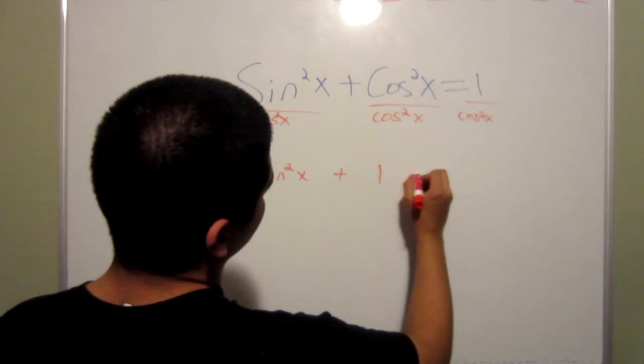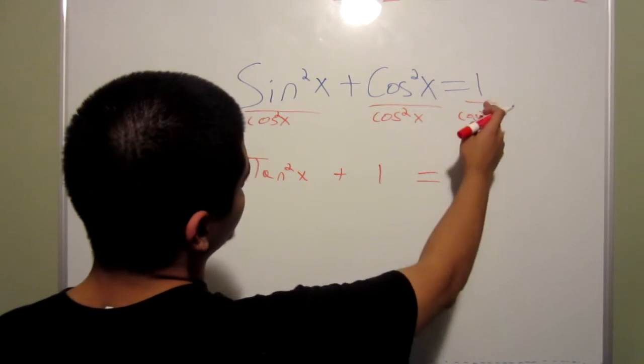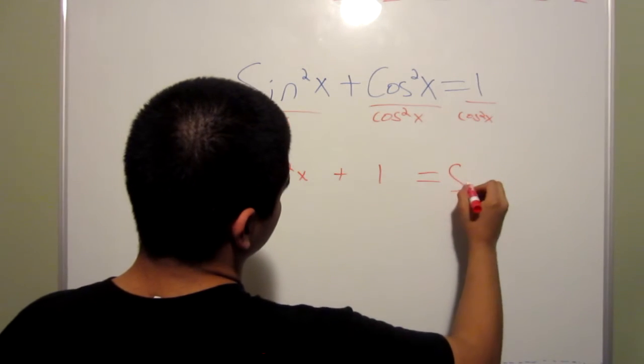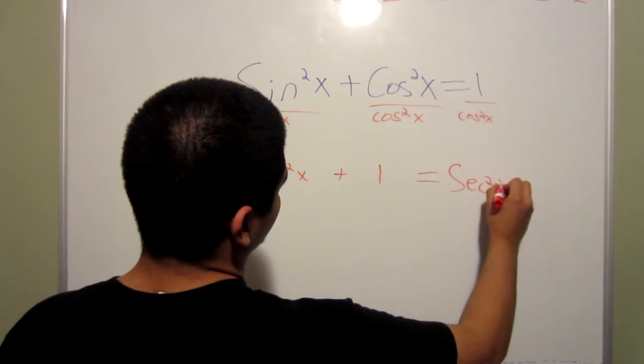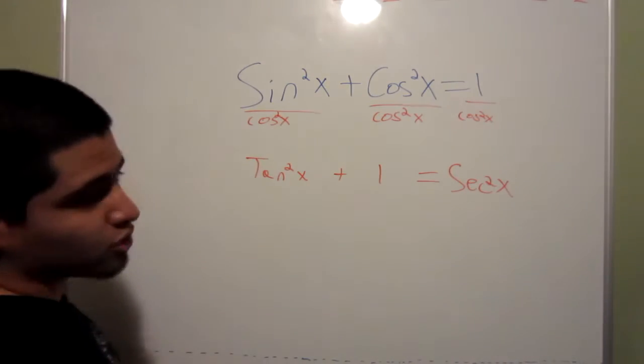Equals 1, equals 1 over cosine squared x, the same thing as secant squared x. So, that's the other Pythagorean identity.